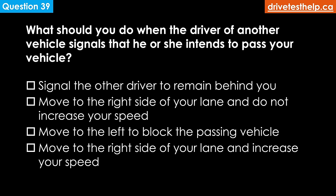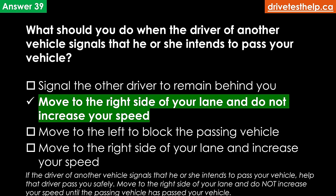What should you do when the driver of another vehicle signals that he or she intends to pass your vehicle? Options: signal the other driver to remain behind you; move to the right side of your lane and do not increase your speed; move to the left to block the passing vehicle; move to the right side of your lane and increase your speed. The correct answer is move to the right side of your lane and do not increase your speed. In fact, be prepared to slow down to help the passing driver get in front of you more quickly to prevent a collision.